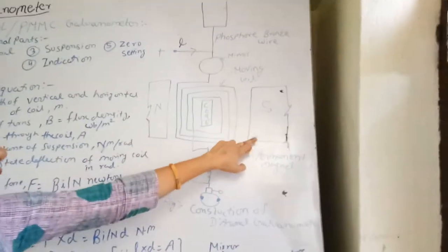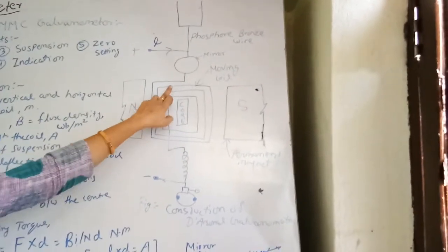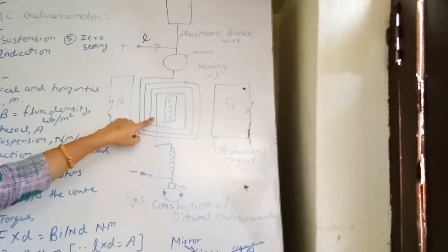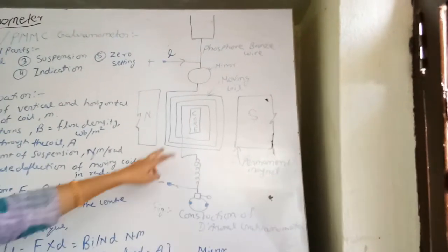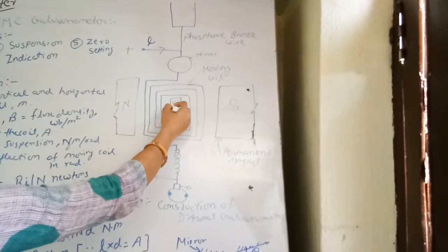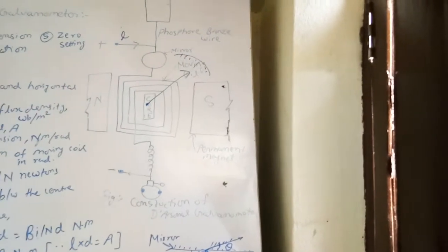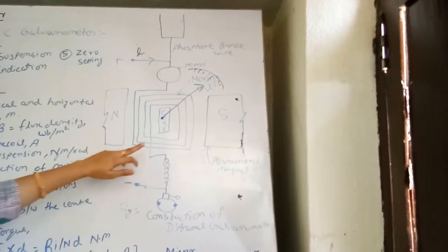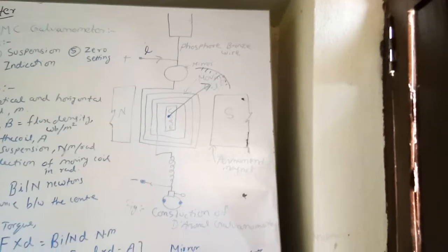There is another field due to the permanent magnet. These two fields are at some angle delta. Then torque will be produced on the coil. If it is movable, then it will rotate, and a needle connected through this core will read the current or show the detection of the source.